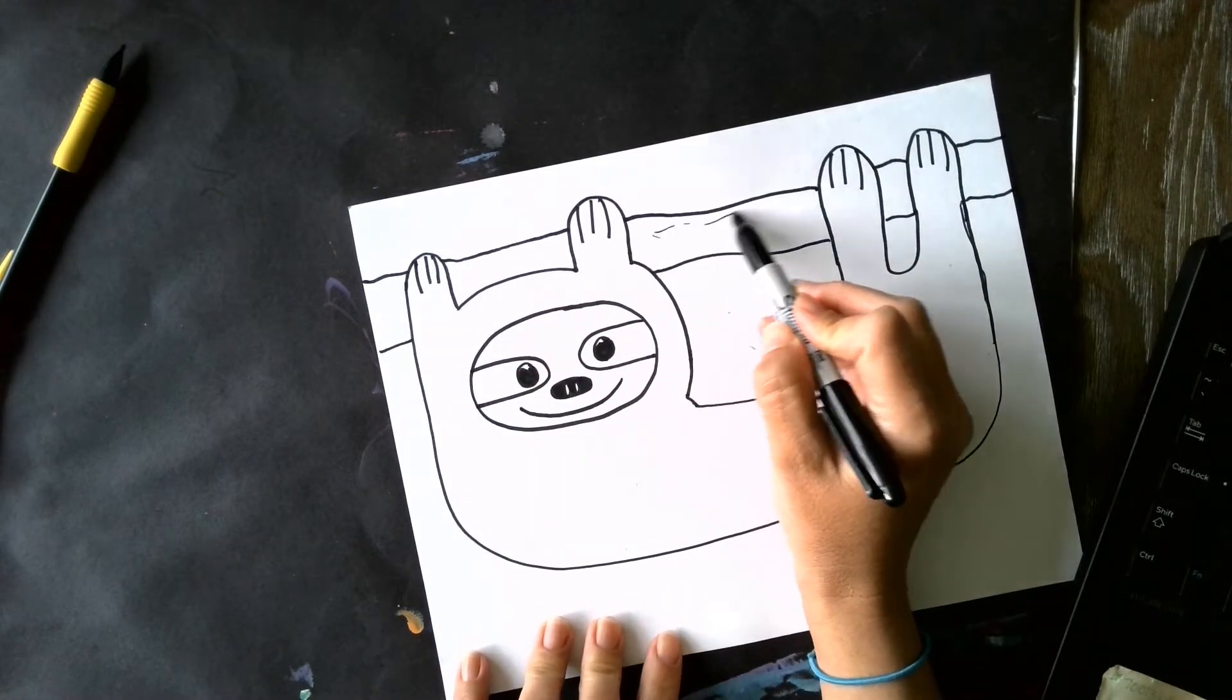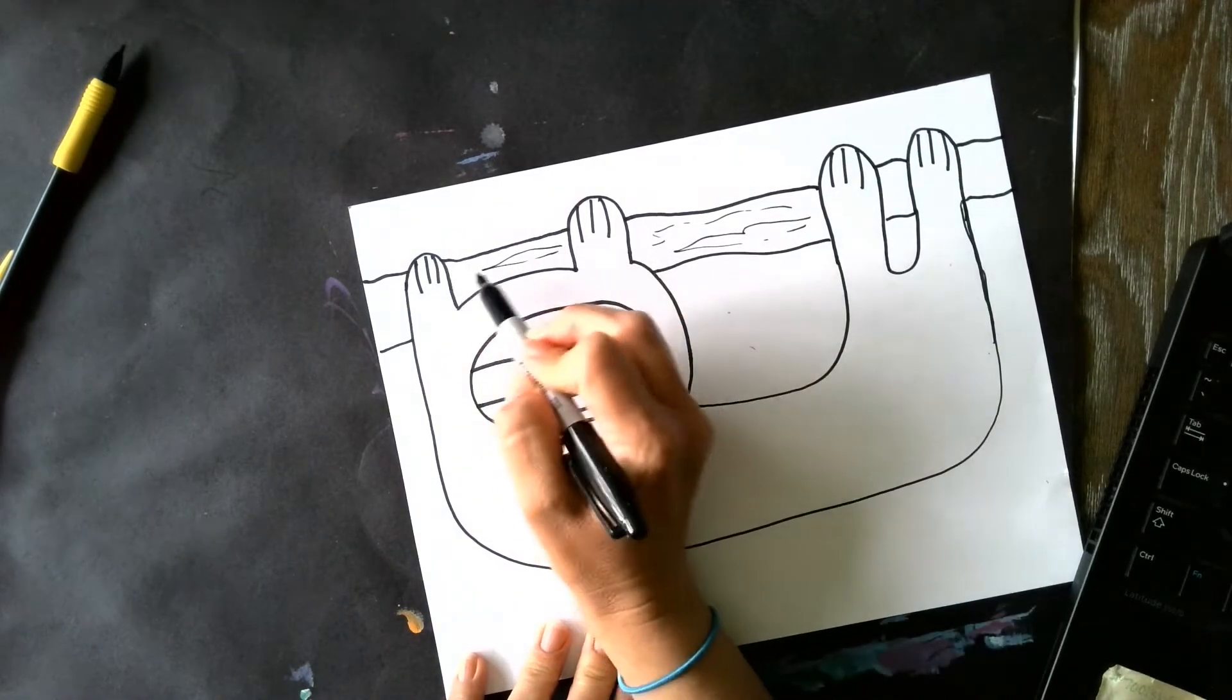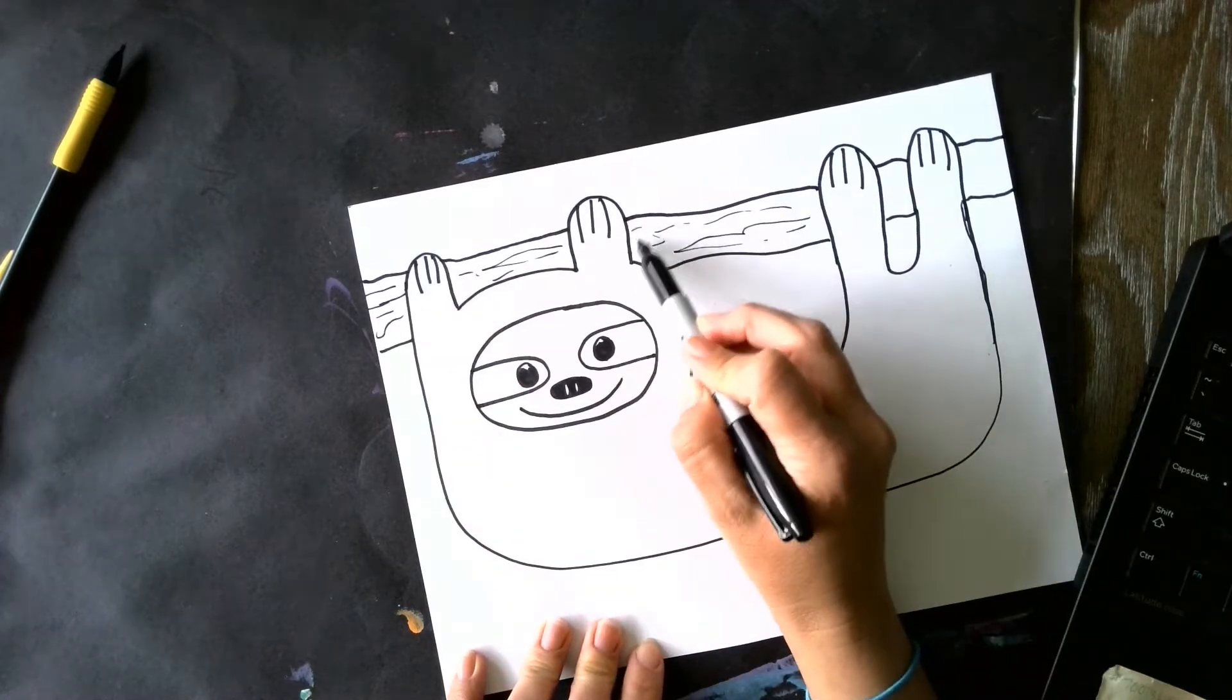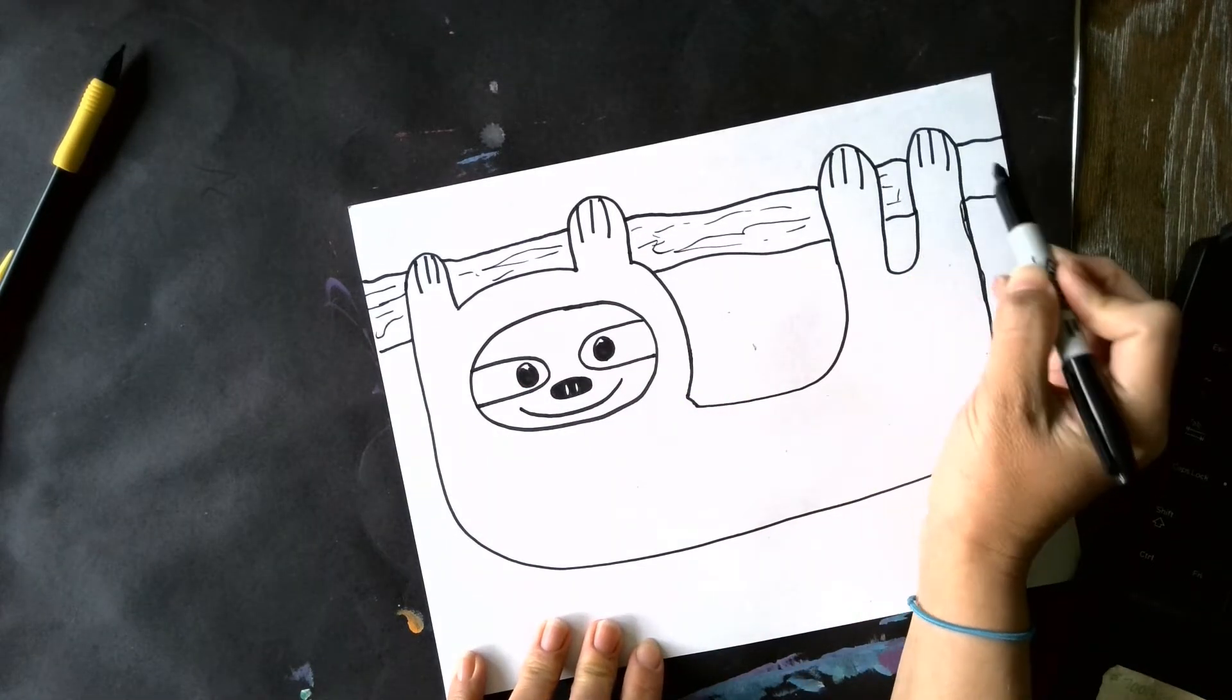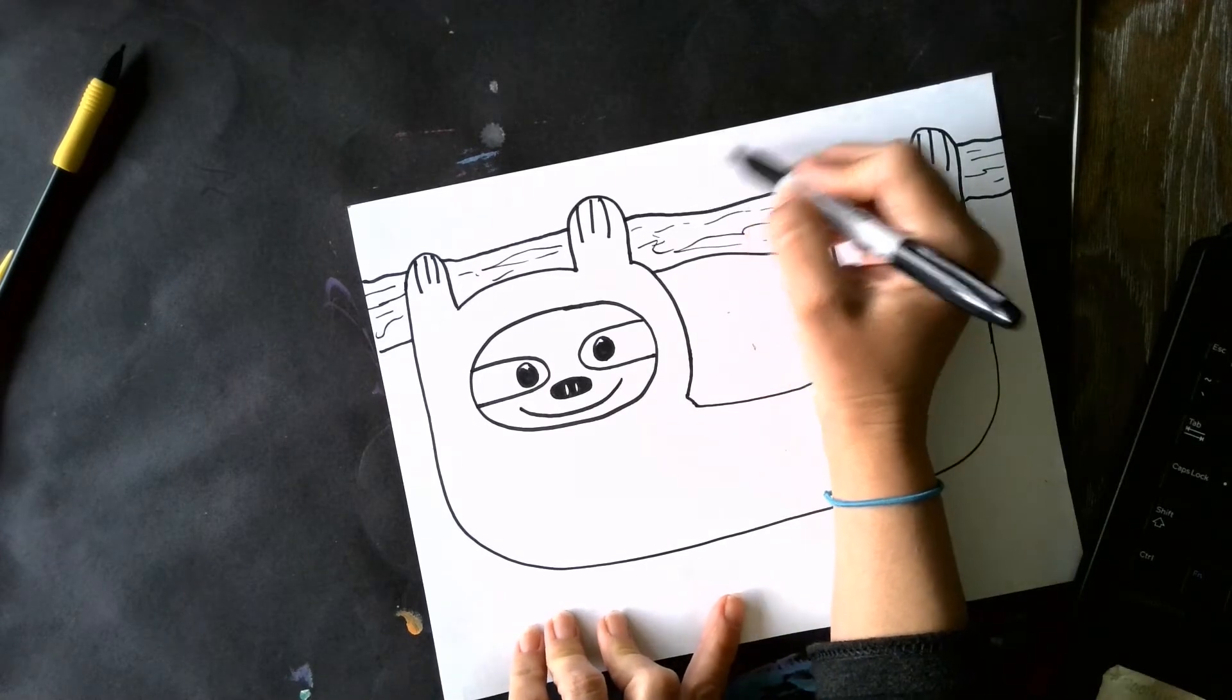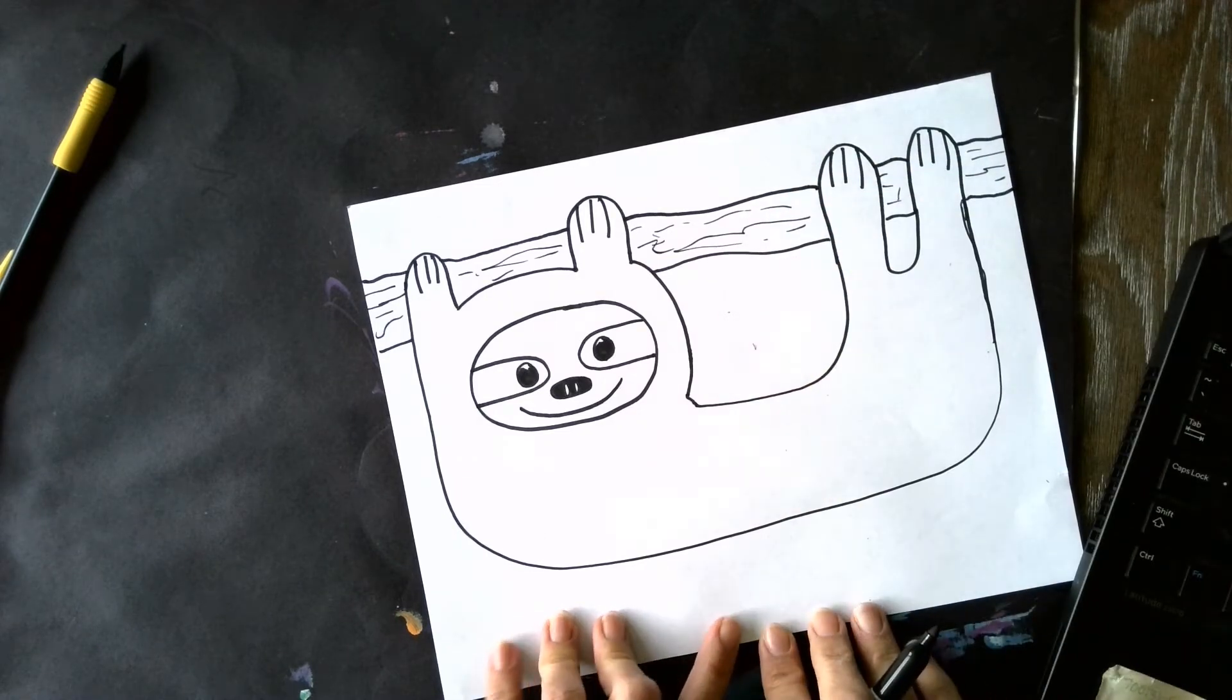It's actually going to have a little bit of texture to it. So we do branches quite a bit in class. And we know that they are rough and scratchy and bumpy. And if you wanted to have some actual smaller branches coming off, you could absolutely do that too.